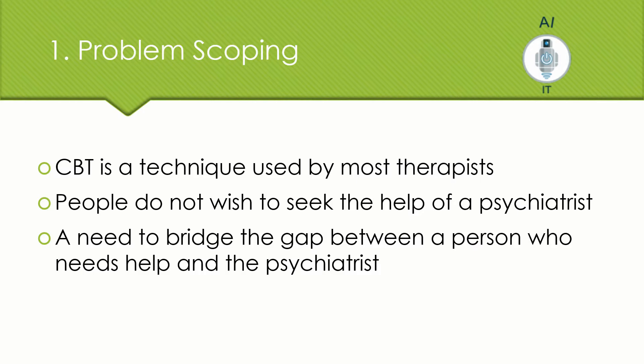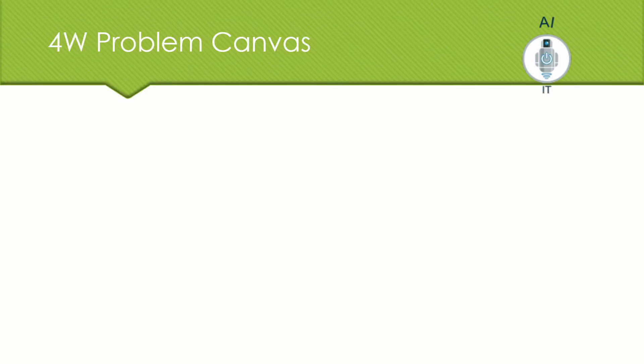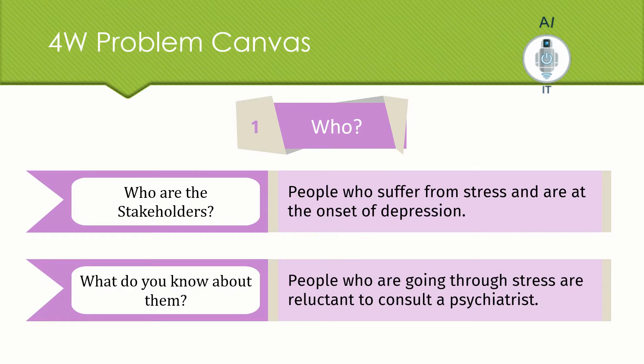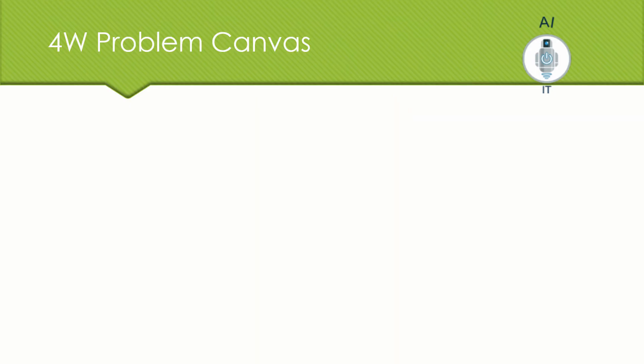The first stage of AI project cycle is problem scoping wherein we are going to finalize the aim of AI project. For this, we make use of 4W problem canvas. The first W is WHO. Here, we look into the stakeholders. Who are the stakeholders here? People who suffer from stress and or the onset of depression. What do you know about them? They are not ready to go meet a psychiatrist and get their issue solved.